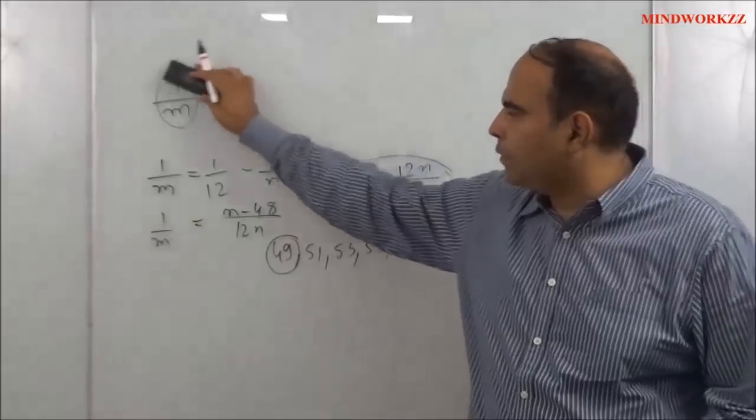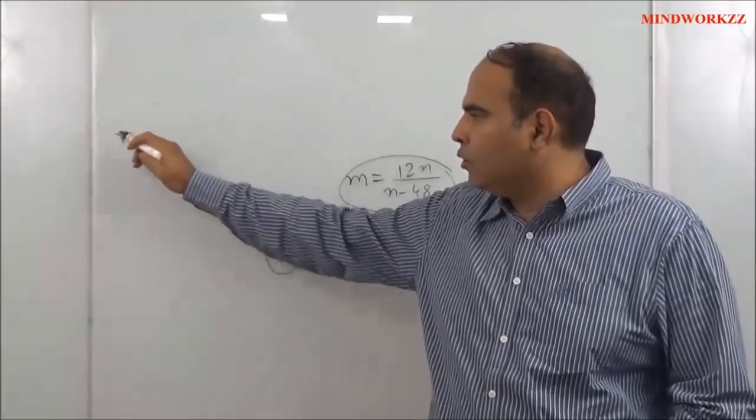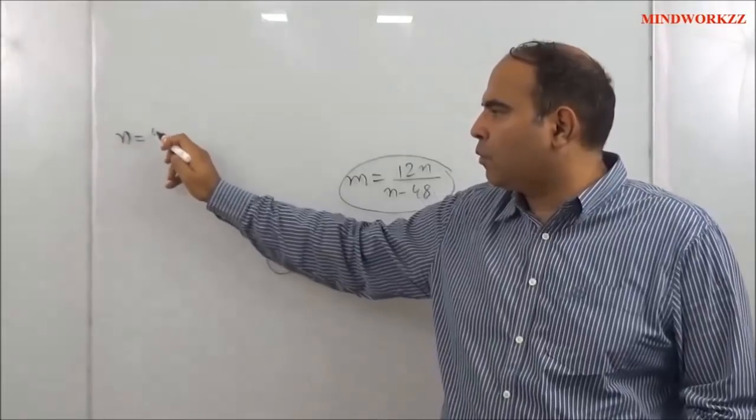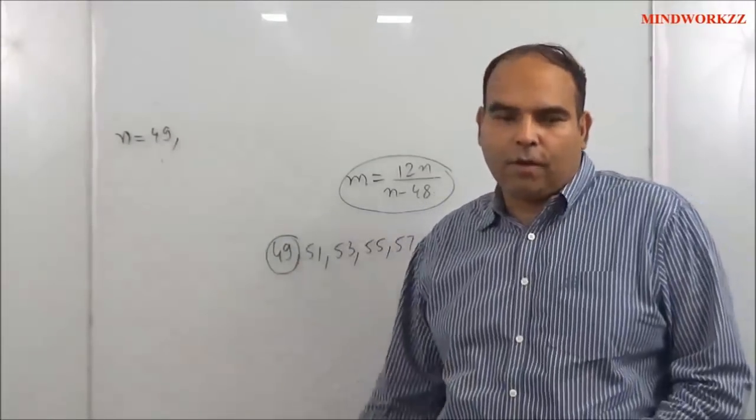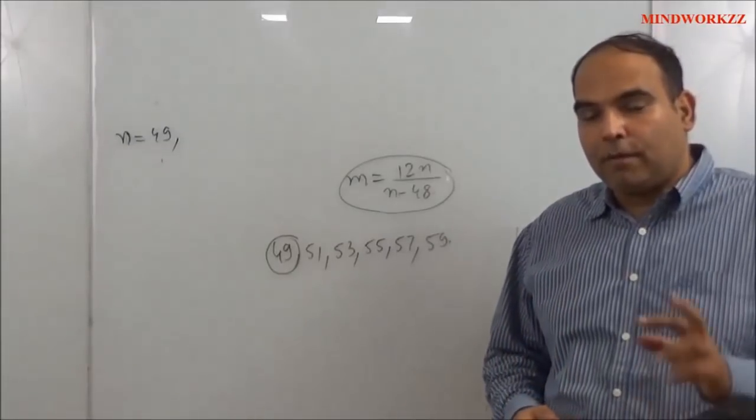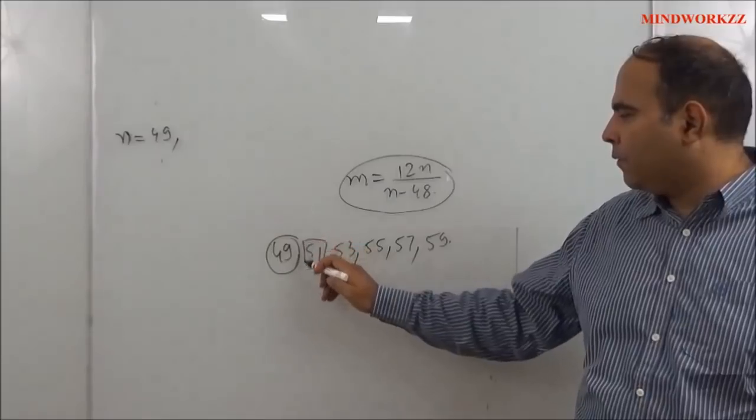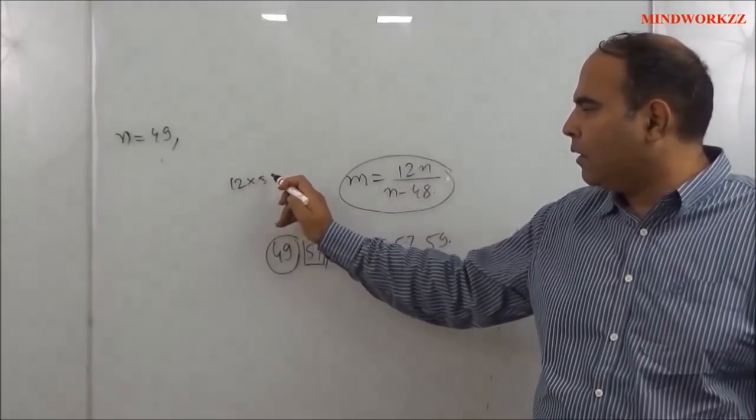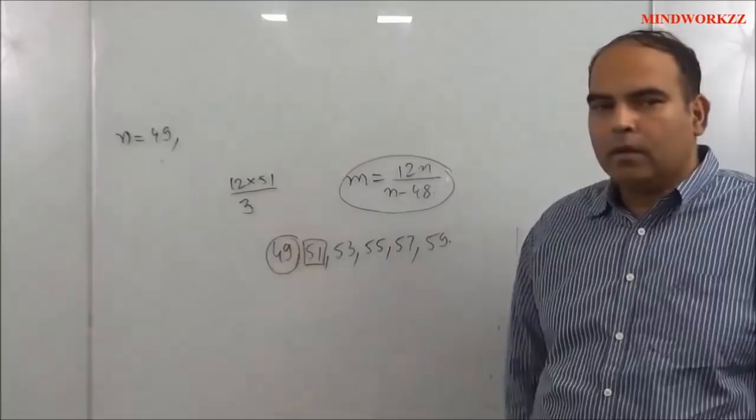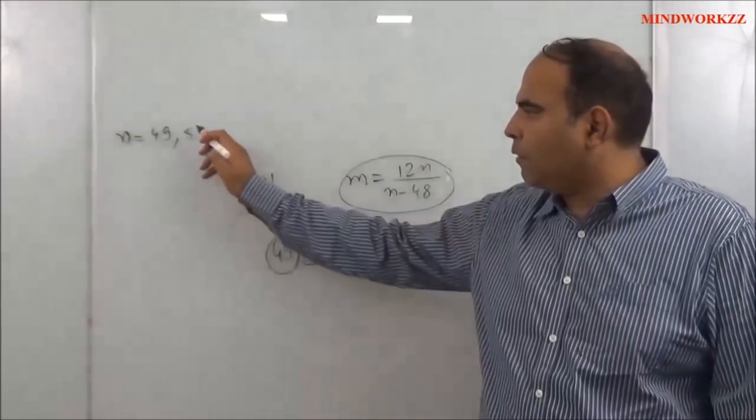will be one solution for you. So you start listing terms for solution. You don't need to find the solution because what m will be is not what they've asked you—they've just asked you how many integer pair values of m is possible. If you try n as 51, the expression becomes 12 × 51 / 3, and it's quite clear that the 3 will get cancelled out, so at n = 51